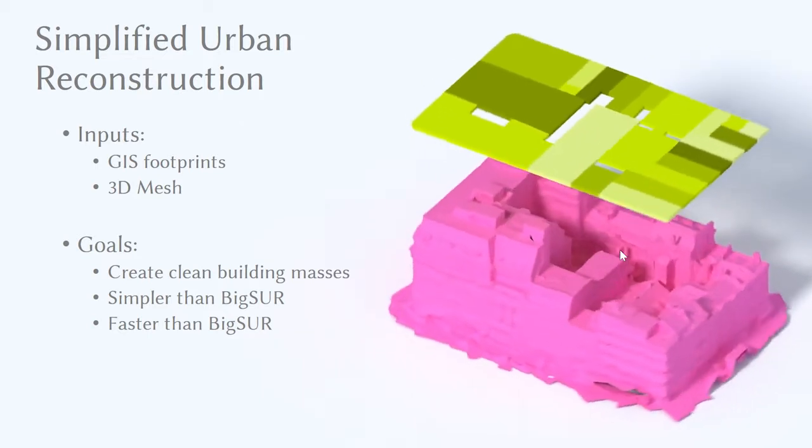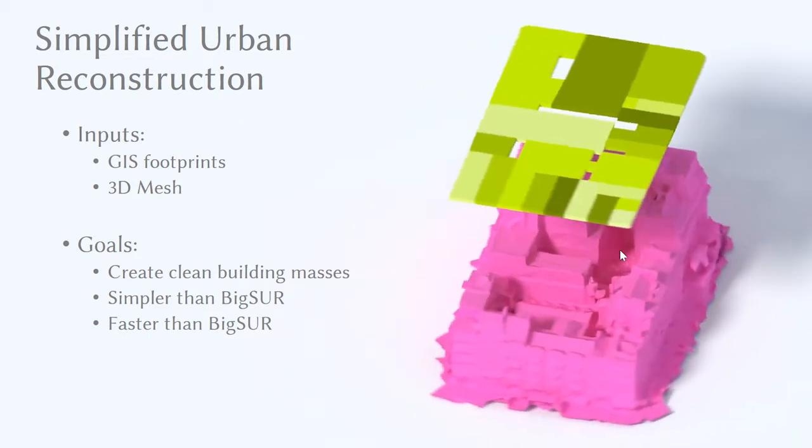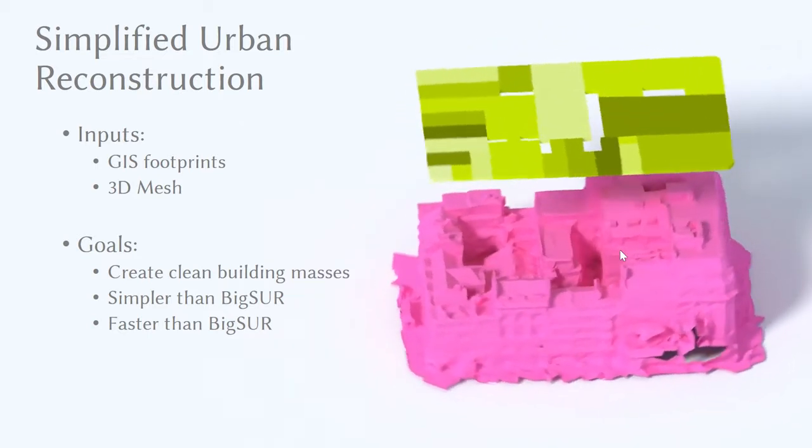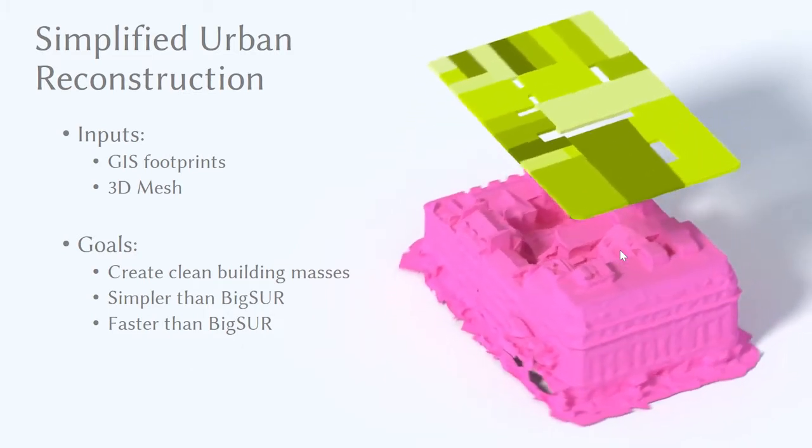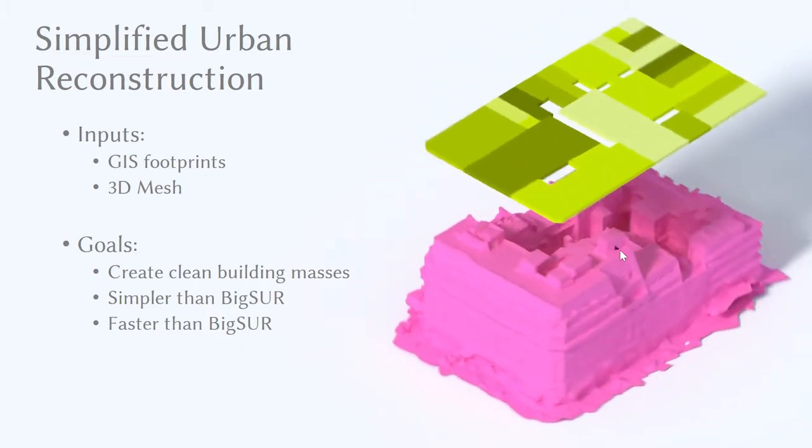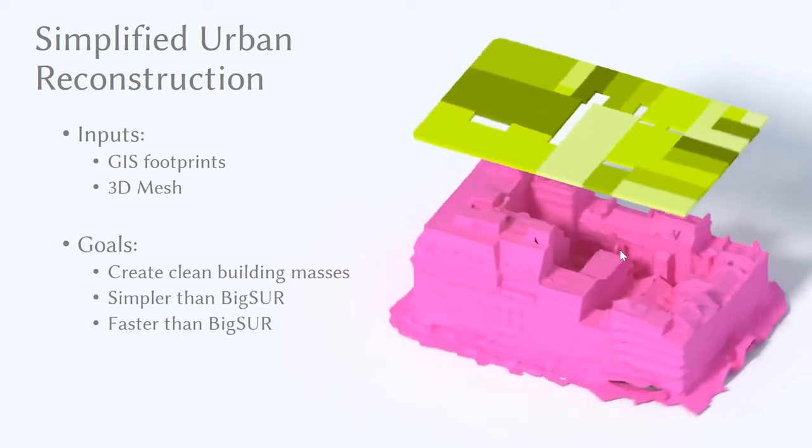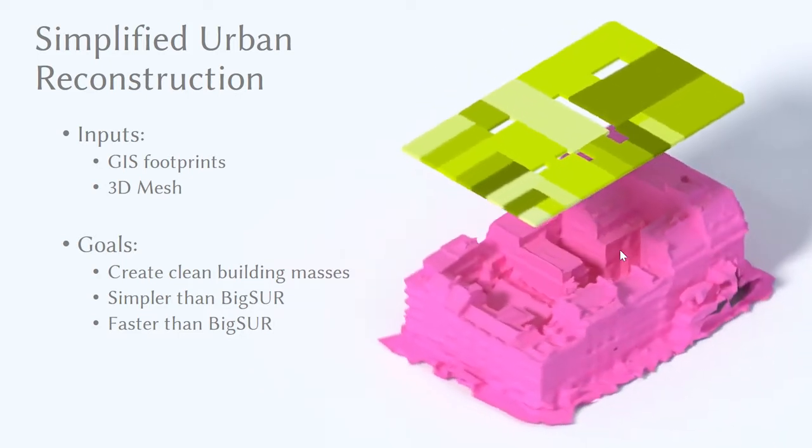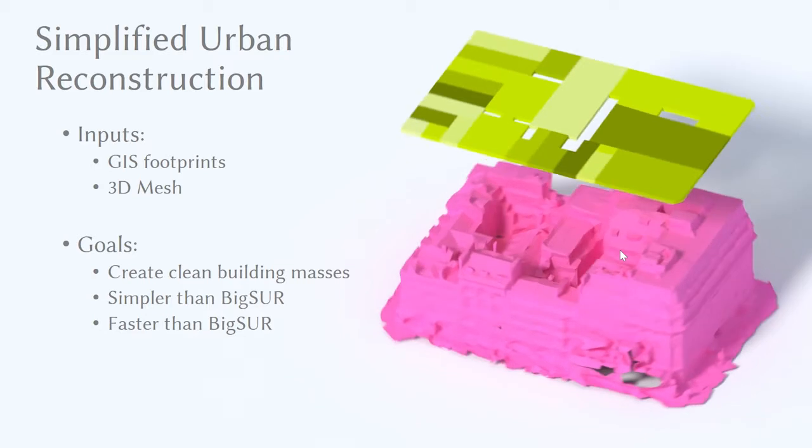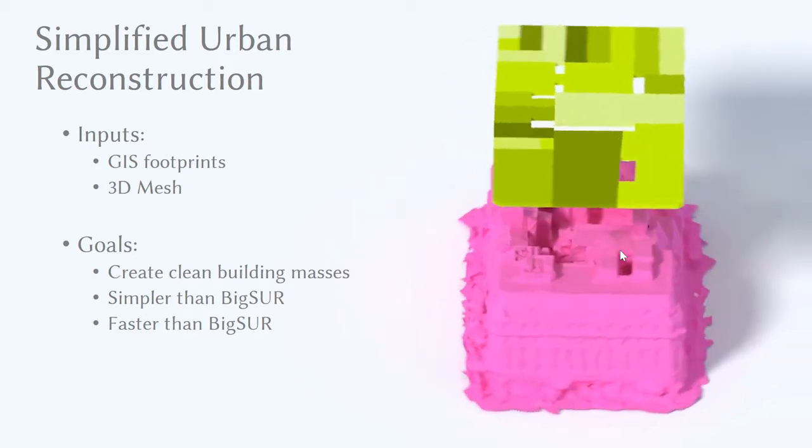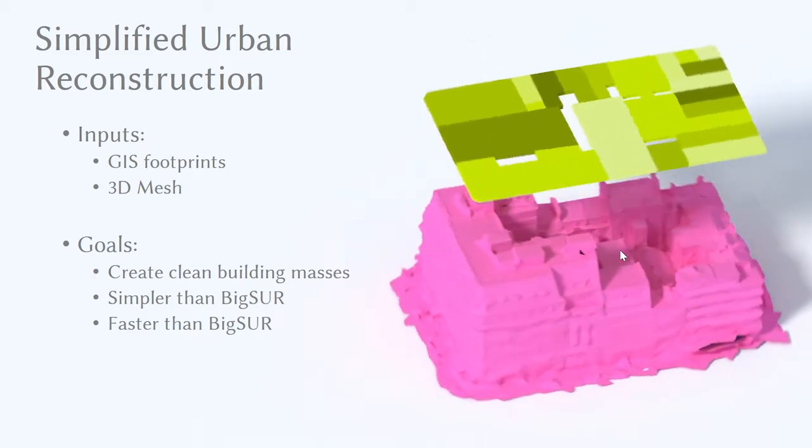Typically, these GIS footprints come from mapping providers, and the 3D meshes come from photogrammetric reconstruction, or LIDAR reconstruction, but they typically contain a lot of noise. Here we can see noise examples in the model, and often holes and other problems with these meshes. So the goal is to have a robust system that can work with these two data sources.